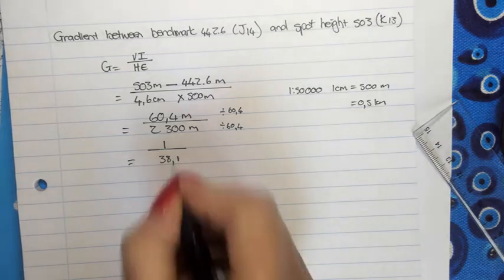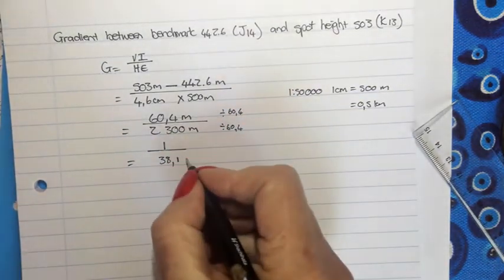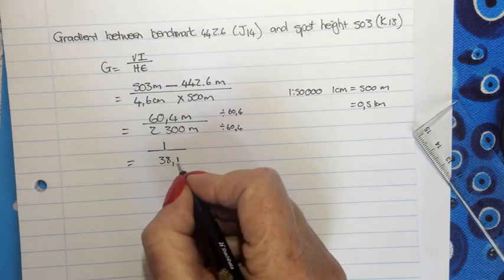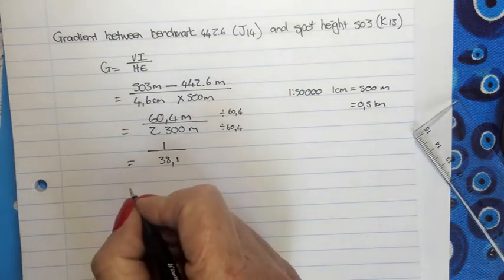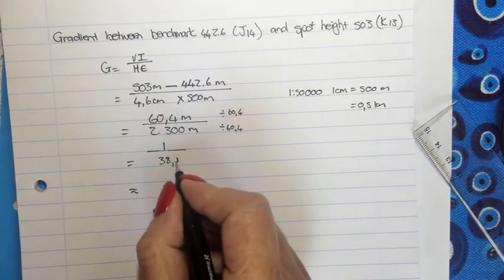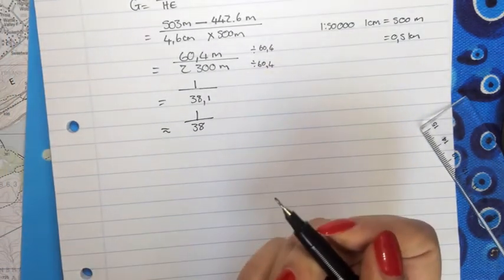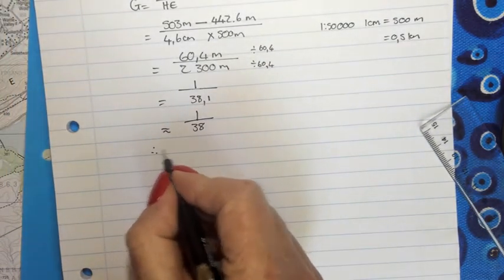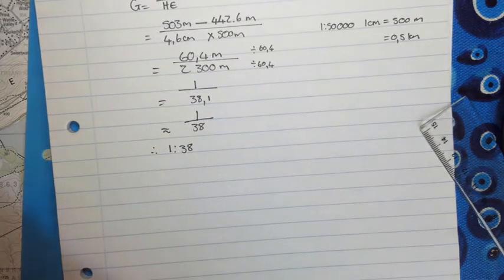38.1. And you can see that in school they usually told you to not round it off. At university level you are going to round it off for me. Because usually we indicate it as a whole number. So, that comma 1 means this is 1 over 38. But this is not usually how we indicate gradient. We usually indicate gradient as 1:38.